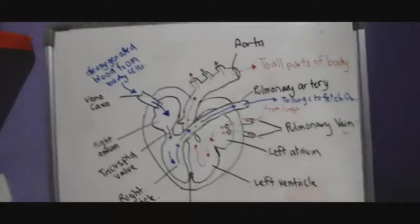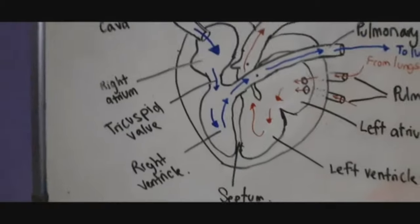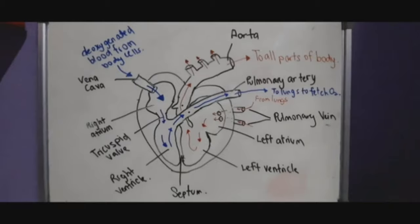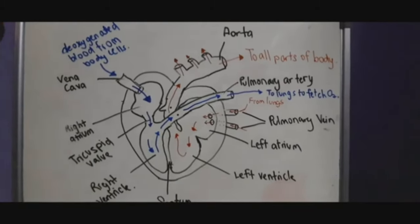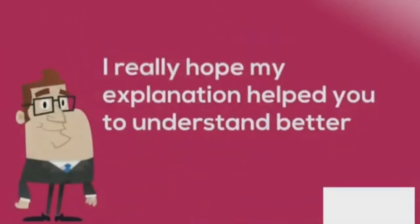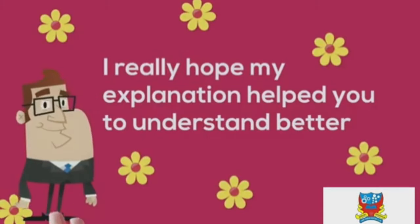From the right ventricle, deoxygenated blood flows through the pulmonary artery back to the lungs to collect more oxygen. Key structures to know include the septum, ventricles, and tricuspid valve. I hope this explanation helps you understand better.